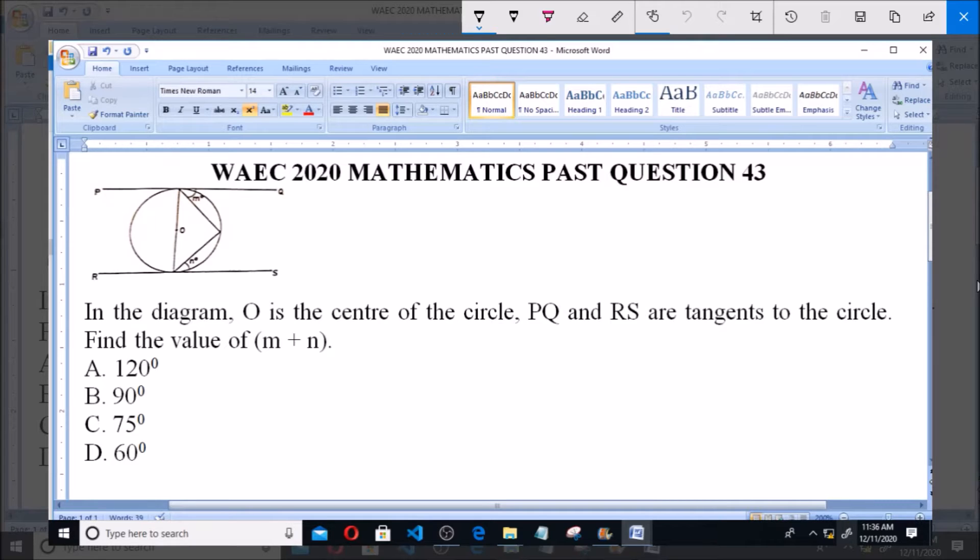In the diagram, O is the center of the circle. PQ and RS are tangent to the circle. Find the value of M plus N.